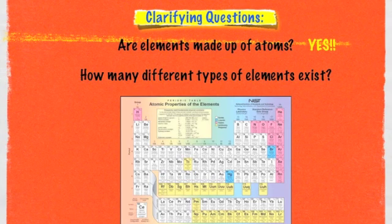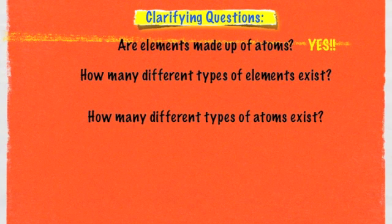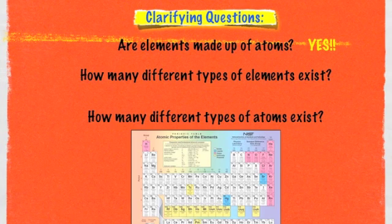How many different types of elements exist? The way to discover this is to look at a periodic table of the elements. For every block, or tile, of this periodic table, represents a different element. We have somewhere in the neighborhood of 116 or 117 different types of elements that exist in our world. How many different types of atoms exist? You look at the same chart, because not only does each tile represent elements, they also represent different types of atoms.